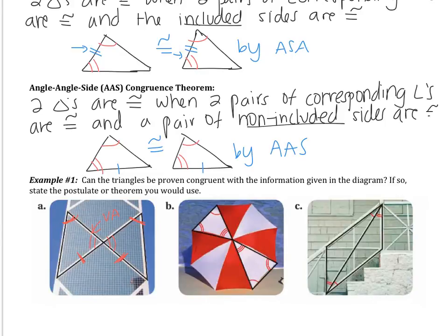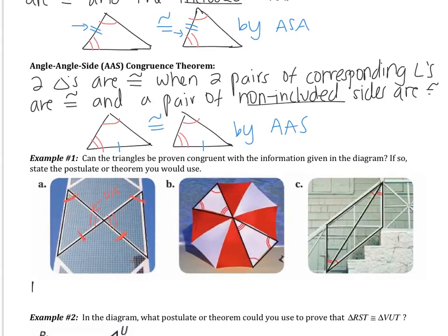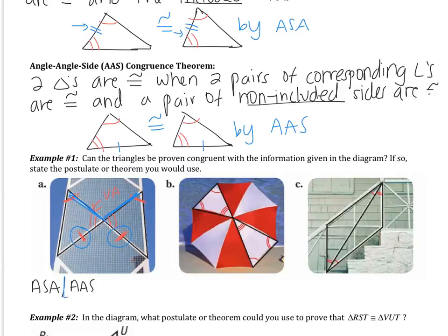Now I have two pairs of angles and a pair of sides, so it looks like it could be ASA or AAS. I need to think: are those the included sides? The included sides connect the angles. In this case, those connecting sides are not the sides I have marked, so this would be AAS — two pairs of angles and a pair of sides, but not the included sides.